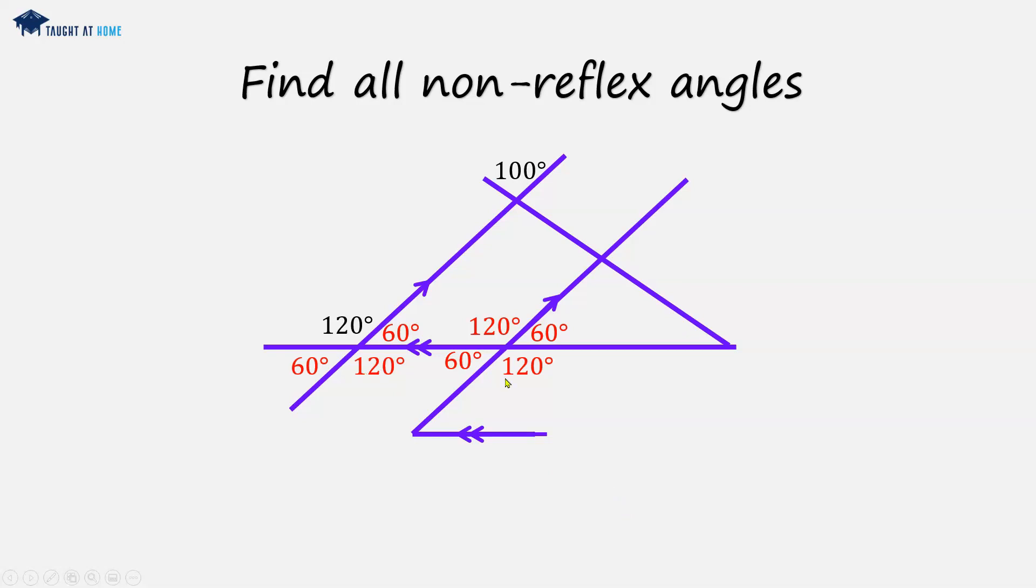Okay, now we have a Z shape, so we've got alternate angles. We've got two parallel lines here, and we've got a diagonal line. So this angle will be equal to this angle, as they are alternate angles.